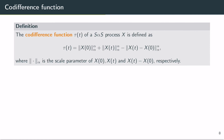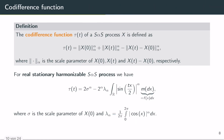In the case of a real stationary harmonizable symmetric alpha stable process, the codifference function has the special form shown here, where sigma is the scale parameter of X0 and also of Xt because our process is stationary, and the remaining term is the scale parameter of Xt minus X0. Assuming that we know sigma and alpha, and assuming that M has a density function F, we can rearrange this.